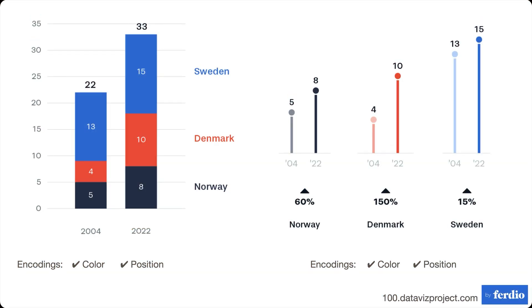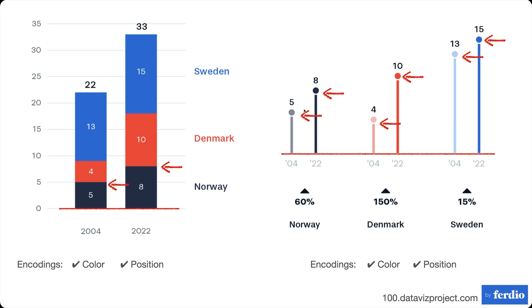The next encoding channel is position. In both visualizations, position encodes data with relative locations from a baseline. For the stacked bar chart, you look at the height from the baseline — for 2014, we're looking at five, and for 2022, we're looking at a value for Norway. You can simply look at the position relative to the baseline, and the relative part matters a great deal. You don't have to compare area or line length; you can just look at where the position is. Position is also the primary encoding channel in the other visualization.